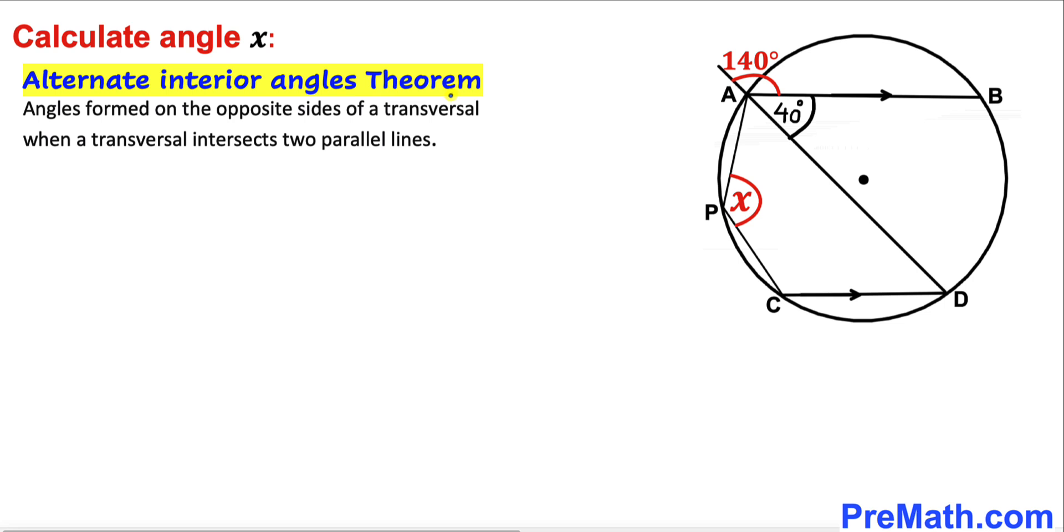According to this theorem, angles formed on the opposite side of a transversal when a transversal intersects two parallel lines—in our case, A, B and C, D are parallel lines, and this A, D is our transversal.